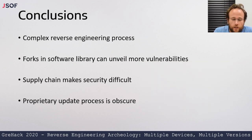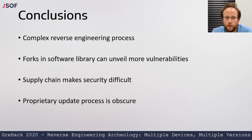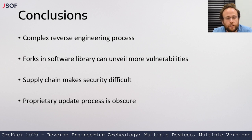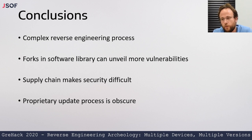To summarize: we went through a complex reverse engineering process across multiple different binaries, different architectures, and different reverse engineering challenges. There were a lot of forks in the software library; the different forks revealed more vulnerabilities as we did patch diffing and found bad fixes, with different vendors using different parts of the code and compiling it differently. Supply chain makes security extremely difficult for everybody involved, and we need new ways to communicate and deal with these issues.